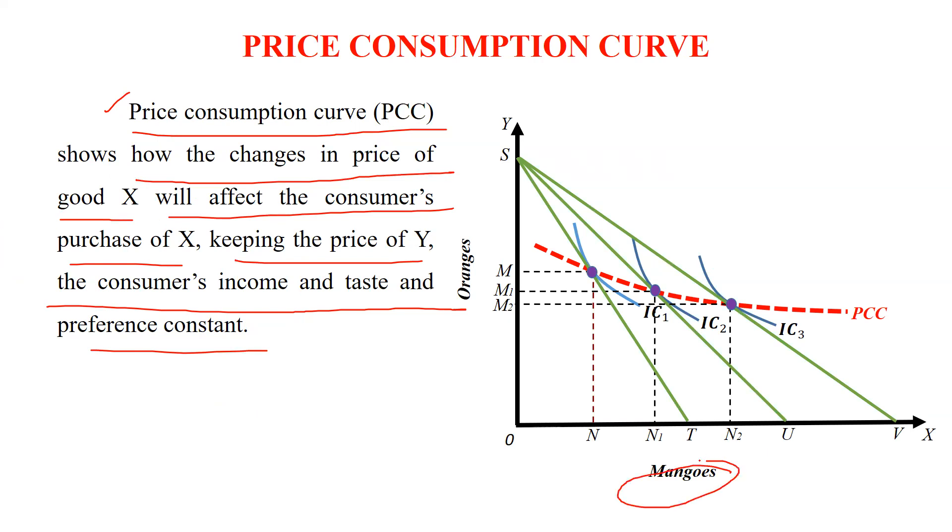Only what we are finding out is changes in the price of good X. This is good X, mangoes. So how it will affect the consumer's purchase of X? When we are reducing mangoes price or when we are increasing mangoes price, how the consumer behavior would reflect.